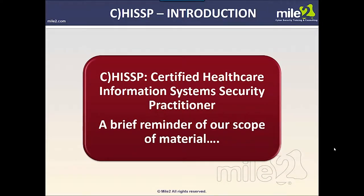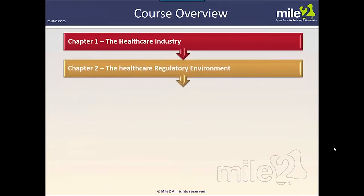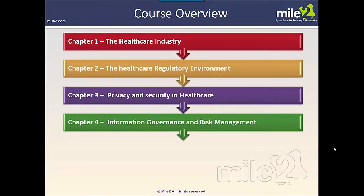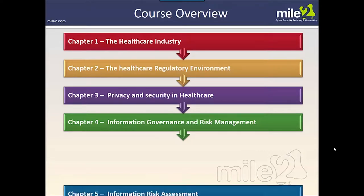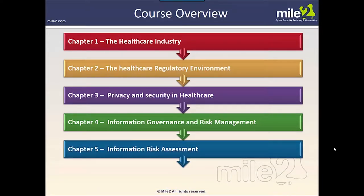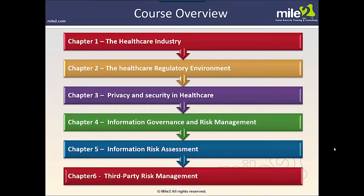Hopefully we'll give you an opportunity to cross-correlate this course content with the scope of knowledge provided by the CISSP designation, allowing you to shift that collateral onto healthcare-related matters as a specialty area. The Certified Healthcare Information System Security Practitioner is a different spin on information security as traditionally thought of through the CISSP lens. To briefly recap the scope of material: healthcare industry, regulatory environment, privacy and security focus, information governance, risk management, compliance, information risk assessment, and a look at third parties — the vendor community providing products and services to the healthcare delivery system.